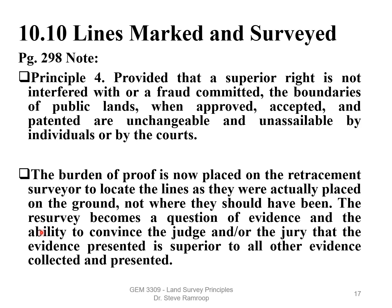Section 10.10, page 293. Principle 4: Provided that a superior right is not interfered with or fraud committed, the boundaries of public lands when approved, accepted, and patented are unchangeable and unassailable by individuals or by the court. Once everything is done and set, it is set in stone. The burden of proof is placed on the retracement surveyor to locate the lines as they were actually placed on the ground — not where they should have been. The retracement becomes a question of evidence collection and the ability to convince the judge or jury that the evidence presented is superior to all other evidence.